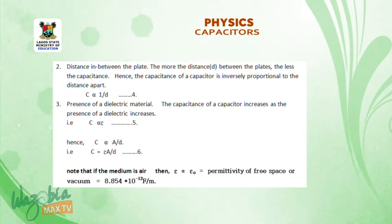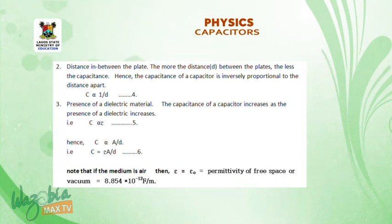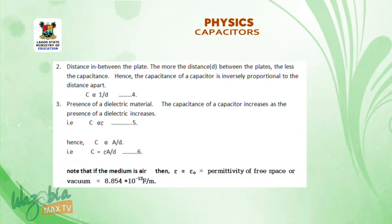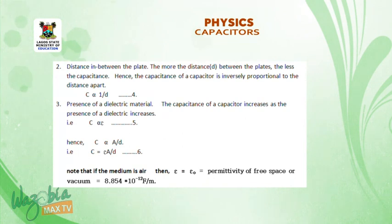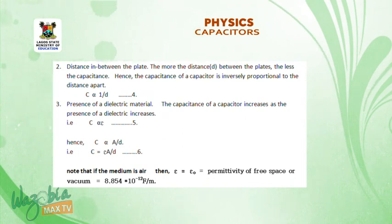Combining these factors gives us C equals epsilon times A over D. Note that if the medium is air, then epsilon is equal to epsilon naught, the permittivity of free space or vacuum, which gives a value of 8.854 times 10 raised to negative 12 farad per meter.